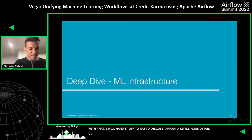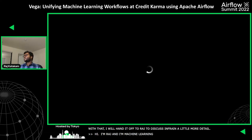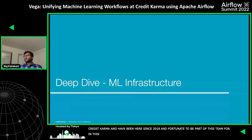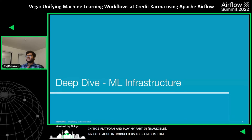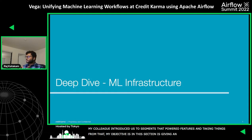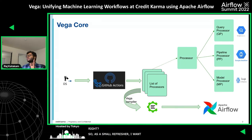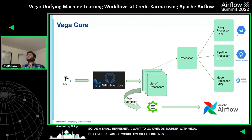Thanks, Nick. Hi, my name is Raj Katakam. I'm a machine learning engineer with the recommendation systems org at Credit Karma. I've been a Credit Karma-naut since 2018, and I'm fortunate to have been part of the founding team of this platform. My colleague Nick has just introduced the core segments which power feature stores and training data. Taking things from there, my objective is to give an overview of DS experimentation and production workflows with machine learning models. As a small refresher on the DS journey with Vega: DS comes in with different types of processors as a list based on the actions they want to perform.